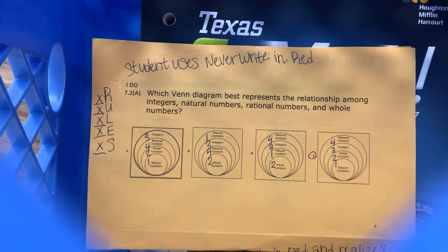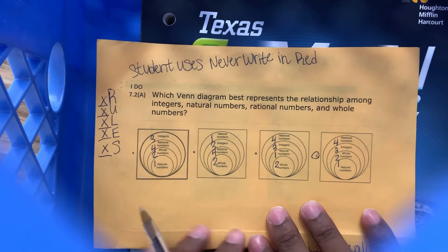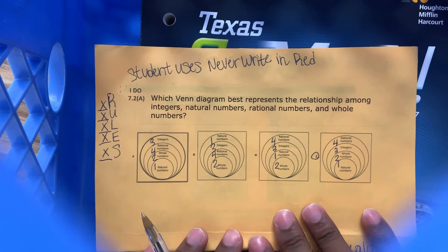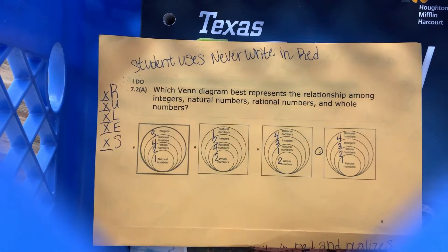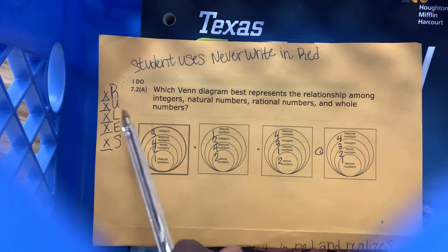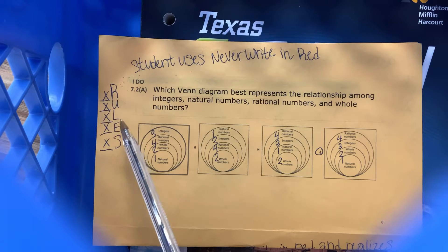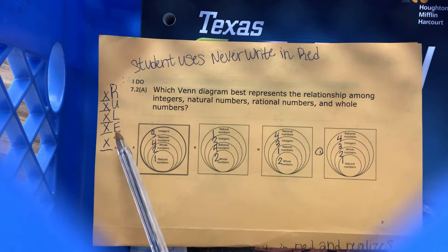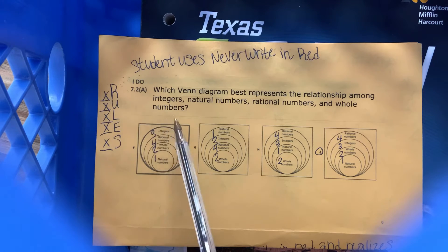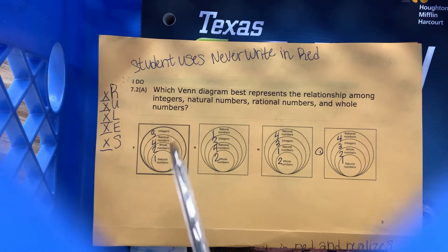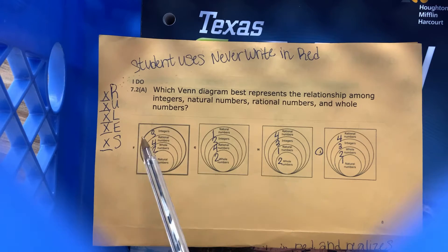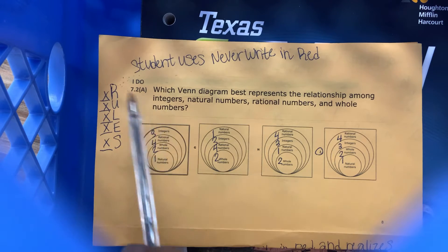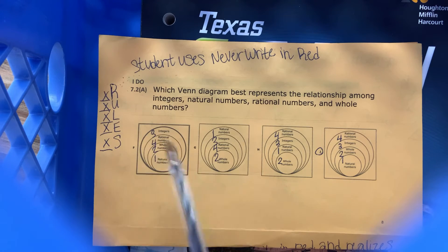Here we have problem 7.2a. As always, we read the word problem, underline or highlight the specific question, label by boxing all key terms and circling all numbers, eliminate and explain incorrect or unneeded answer options, evaluate if needed, and then finally we select the correct answer — our procedural, conceptual, and accuracy steps.